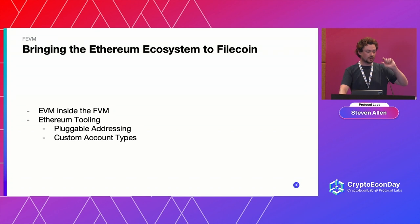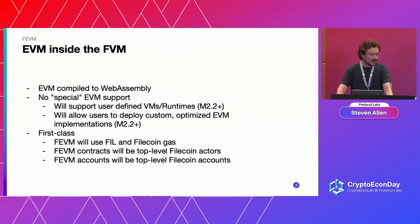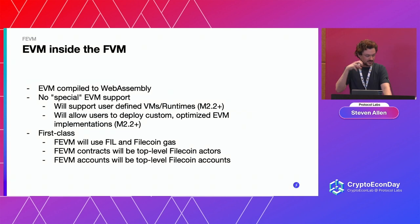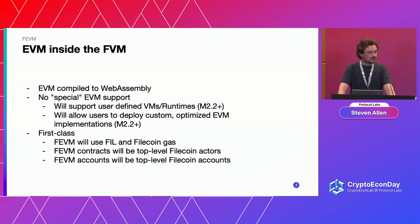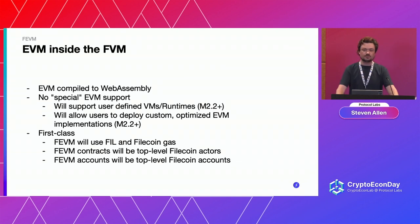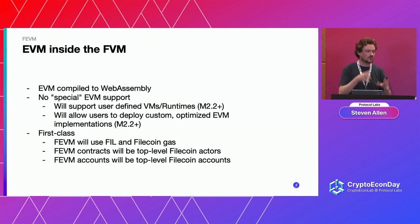This comes in basically two parts: pluggable addressing and custom account types. For the EVM inside the FVM, we take the EVM, compile it to WebAssembly, and run that inside the FVM. One key part here is there's no special EVM support — we're trying to make sure that any features we add are generalizable so that in the future people can add their own VMs to the FVM network.